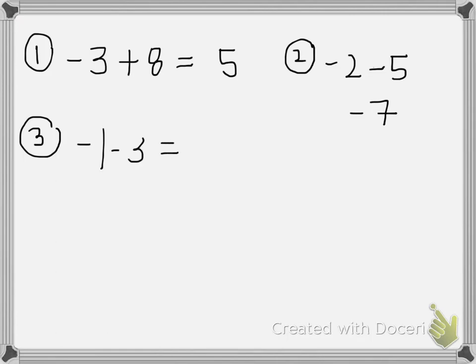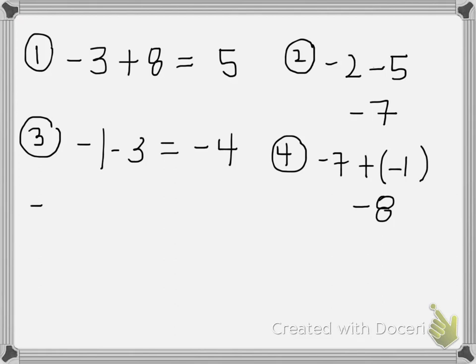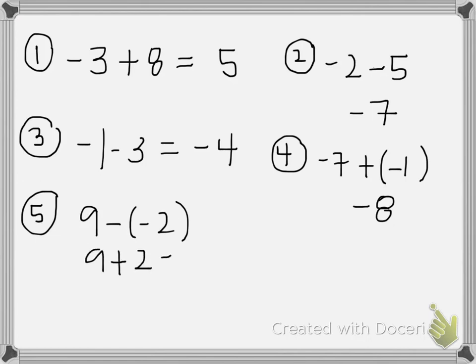So what about negative one minus a three? Same sign, so that's going to give me a negative four. And negative seven plus a negative one — those are the same signs, so we're going to add and keep the sign. Now, nine minus a negative two — that turns into nine plus two, so nine plus two gives me eleven.